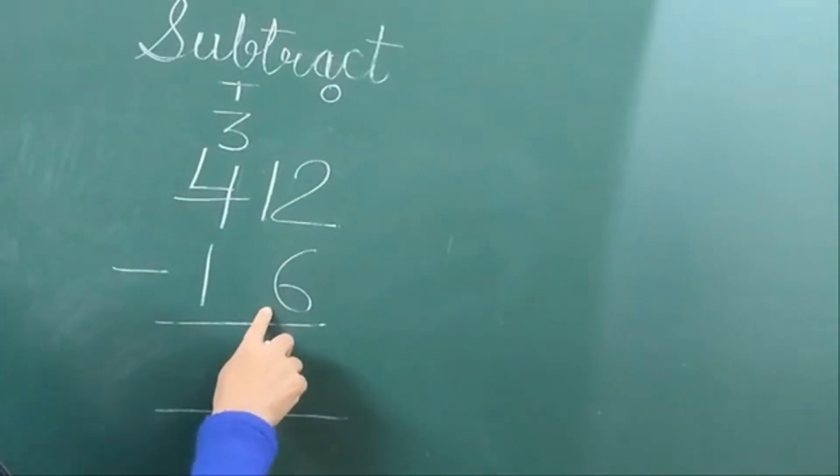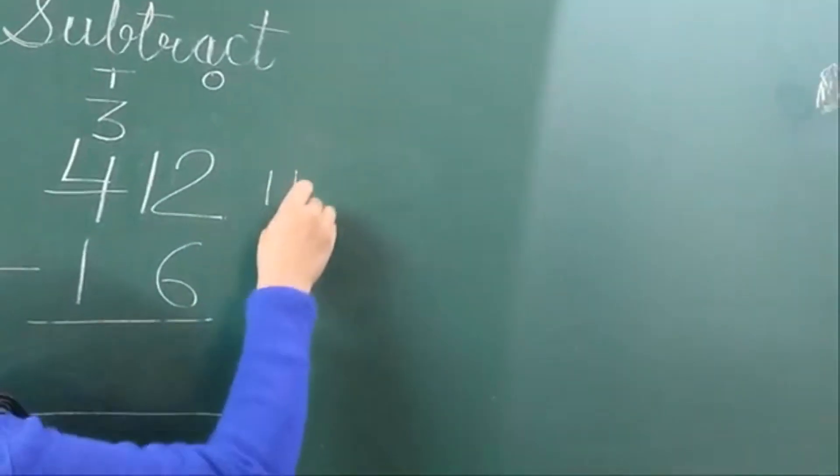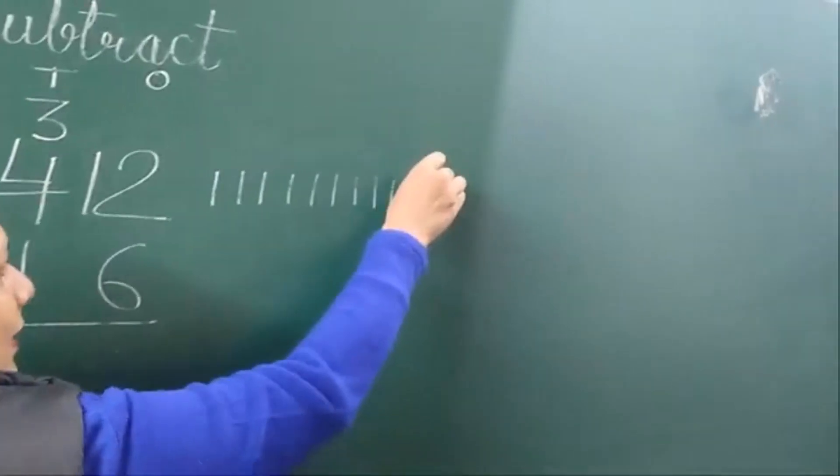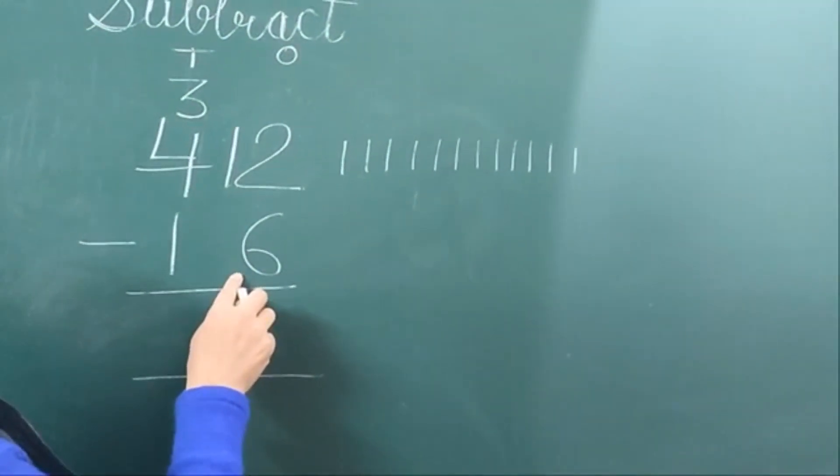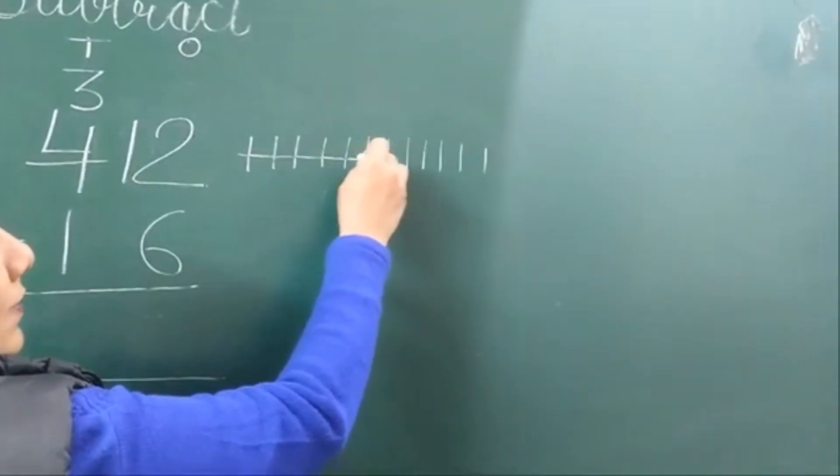Now we need to subtract 6 from 12. Draw 12 lines: 1, 2, 3, 4, 5, 6, 7, 8, 9, 10, 11, 12. Now cut 6 lines: 1, 2, 3, 4, 5, 6.